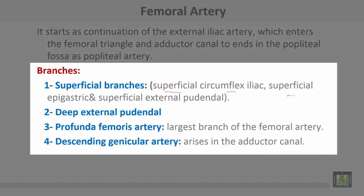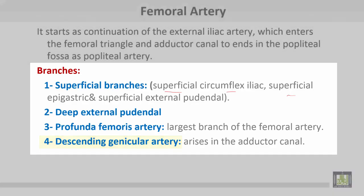Branches of the femoral artery include superficial branches: superficial circumflex, superficial external pudendal, and superficial epigastric. Also deep external pudendal and the profunda femoris artery, which is the largest branch of the femoral artery. The descending genicular artery arises when the femoral artery is in the adductor canal.